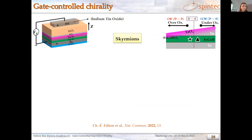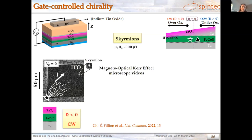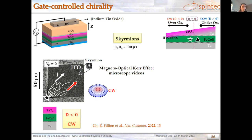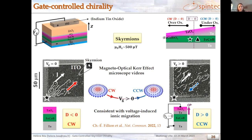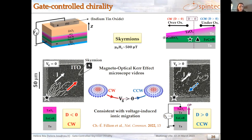We apply the gate voltage to our tantalum / iron-cobalt-boron / tantalum oxide stack at positions where the skyrmion chirality is either clockwise or counterclockwise. We observe that when skyrmions move parallel to the current — indicating clockwise chirality — and we then apply a positive gate voltage, they move in the opposite direction. They have been switched to counterclockwise. This is consistent with removal of oxygen from the interface — as if we move from one oxidation state location to another on our sample map.